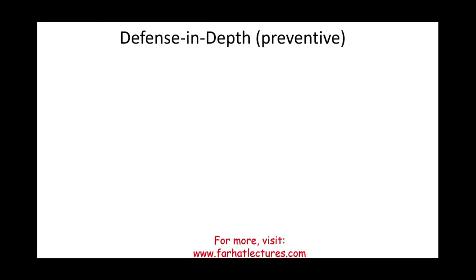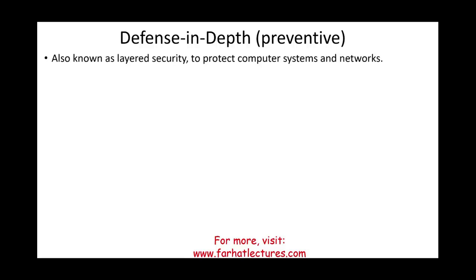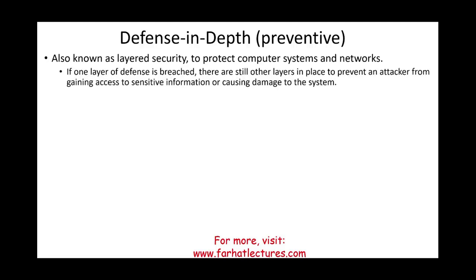Another preventive measure is defense in depth, which means building layers upon layers of security protection for your computer system and network. The assumption is that if one layer is breached, other layers are still in place to prevent an attack — redundancies, so if plan A fails, you have plan B. This protects against attackers gaining access to sensitive information or causing damage, since no single security measure is foolproof.